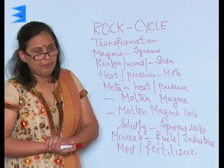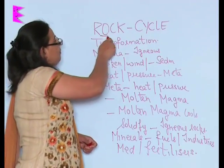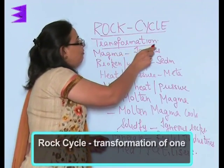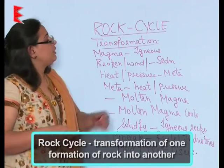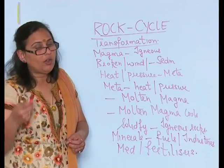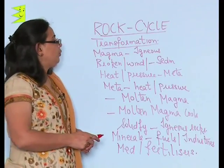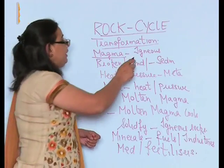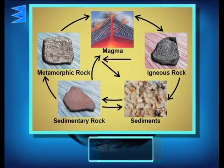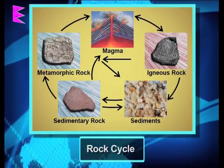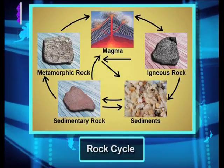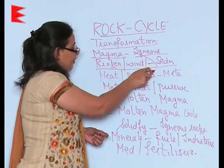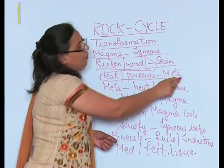The last and most important part of the chapter is the rock cycle. The rock cycle means the transformation of one type of rock into another. Magma cools down to form igneous rock. The igneous rock breaks down into sediments, which are deposited and carried by wind and water to form sedimentary rock. Igneous and sedimentary rocks subjected to heat and pressure form metamorphic rock.